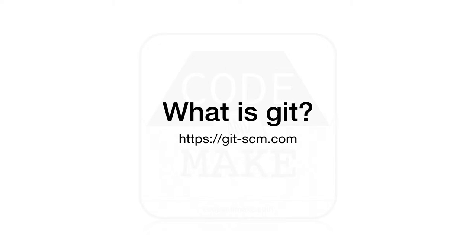Git comes with many features beyond the few I've mentioned here. As such, Git is a very powerful version control system. With Git, your version control strategy — which essentially is how you agree to use branches and merge changes — can be as simple or as complex as you like. For these reasons, Git has grown in popularity over the past few years to become one of the most used version control systems of today.